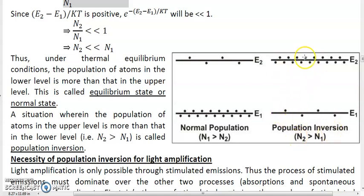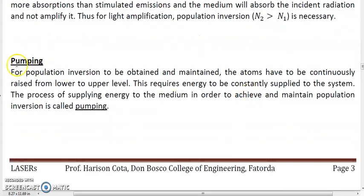This process of supplying energy to the system in order to achieve and maintain population inversion is called pumping. Pumping can be done by different methods — optically by supplying energy in the form of light, or thermally by supplying heat energy, mechanical energy, or electrical energy.